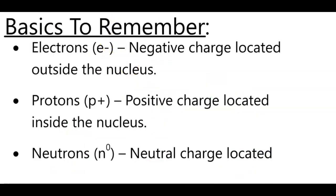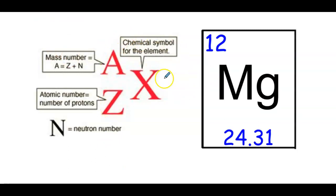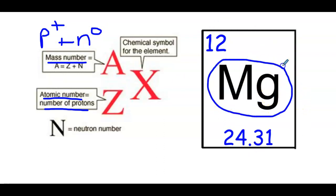Now I'm going to go over these things on the smart notebook. The basics to remember: electrons are represented with an E negative, protons a P positive, and neutrons an N zero. If you are writing the symbol to represent an element, first you have the symbol of the element in position X. At the bottom left of the element, we have the atomic number, which represents the number of protons. At the top left of the element, we have the mass number, which represents protons plus neutrons together.